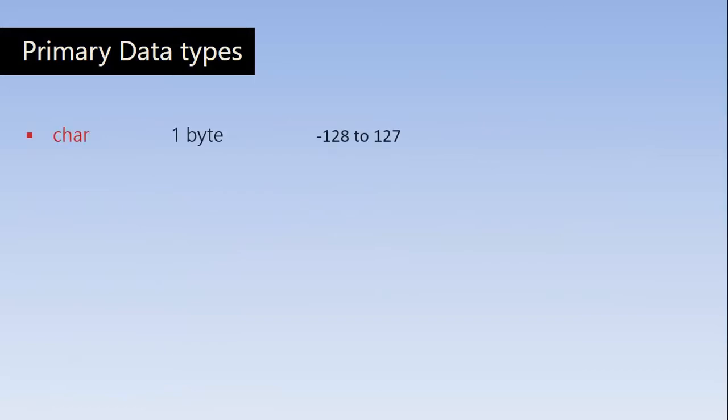First we'll understand the different types of primary data types, also called fundamental or basic data types. First comes the char data type, which requires one byte of memory for a variable. Char represents all characters corresponding to the ASCII code between minus 128 and plus 127. So when you declare a variable with the data type char, it has one byte of memory and can store any character corresponding to ASCII code minus 128 to positive 127.